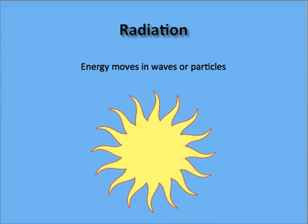Radiant energy moves in waves or particles. Energy from the sun is radiant and we feel it on earth as warmth. Radiant energy is harnessed through solar energy panels and by plants, which turn radiant energy into food.